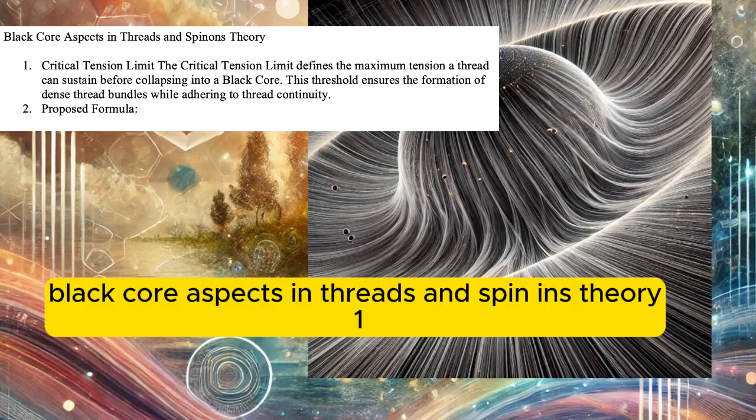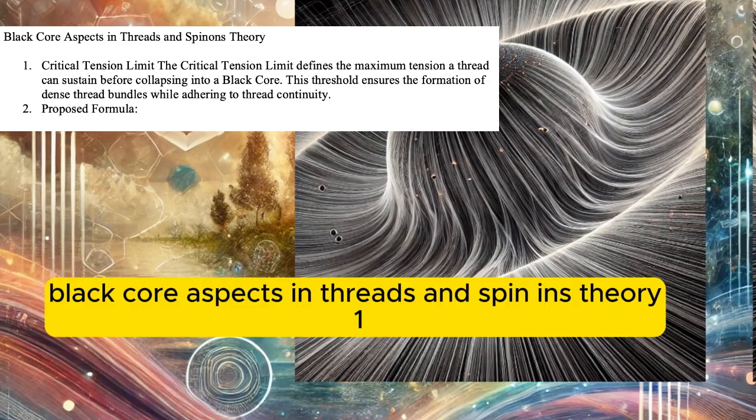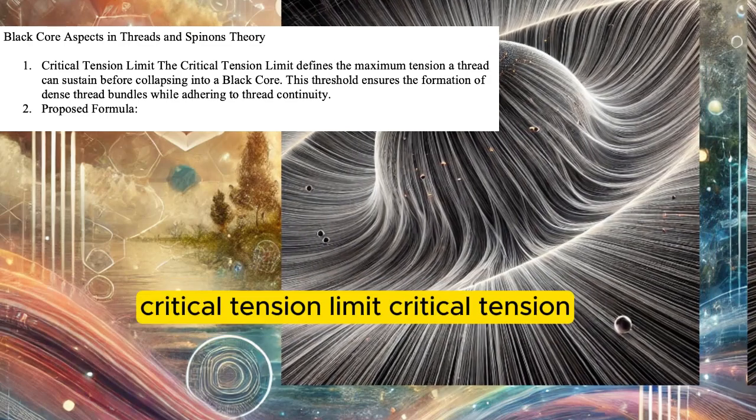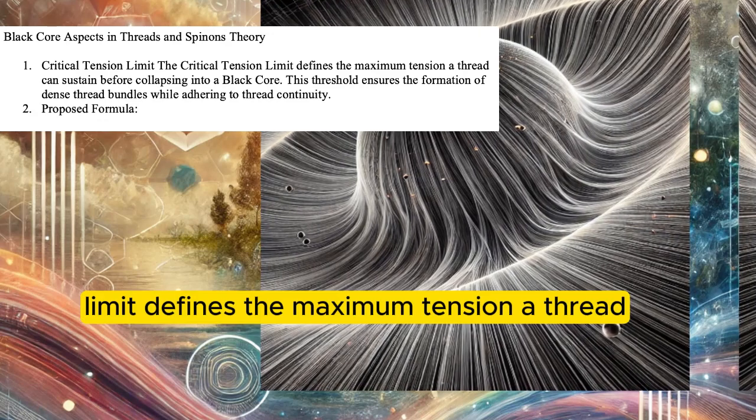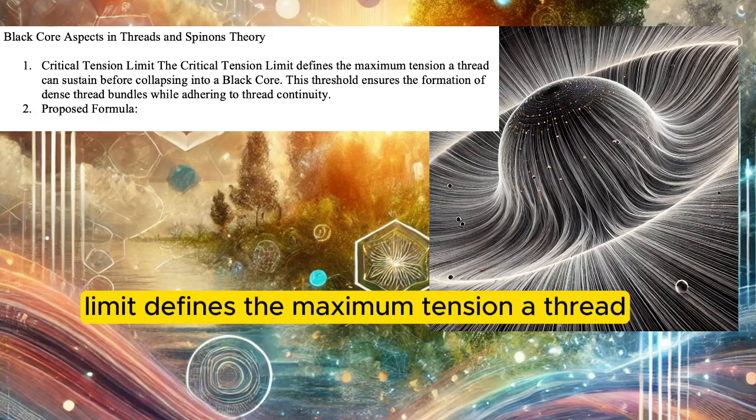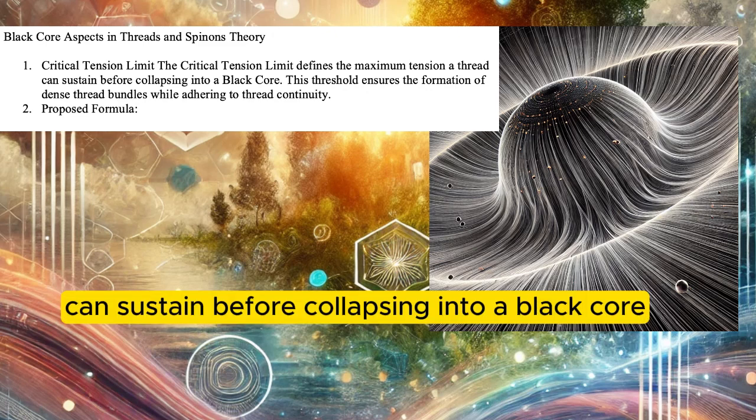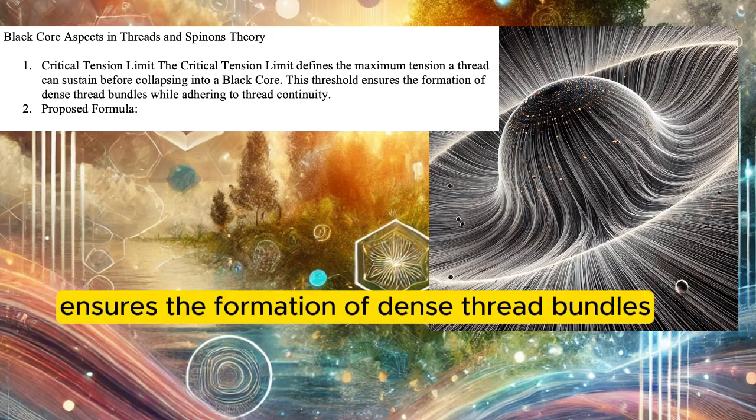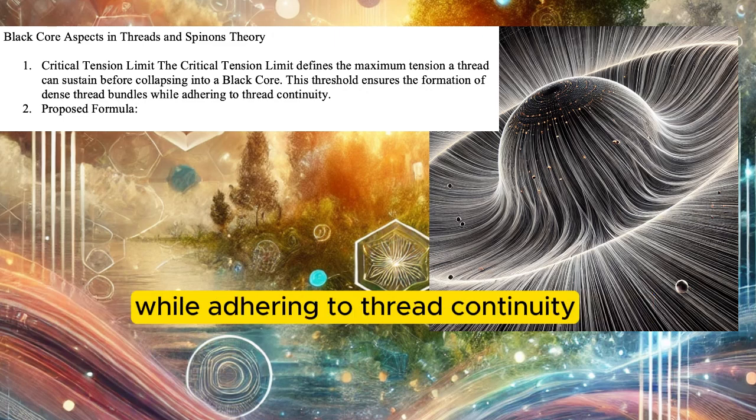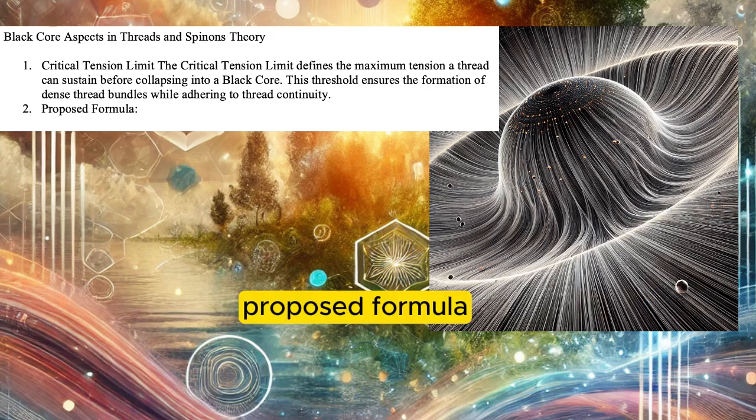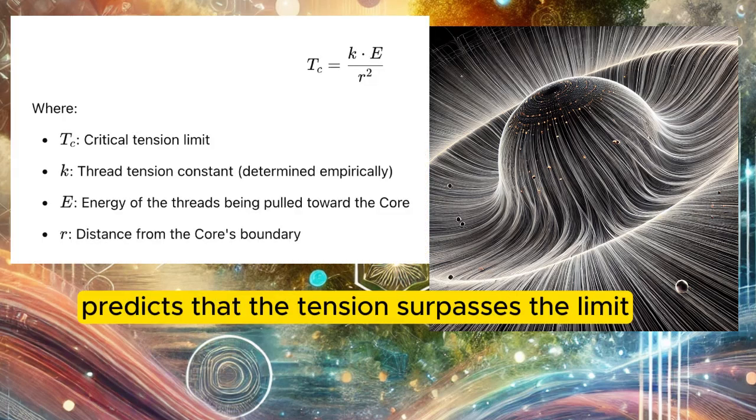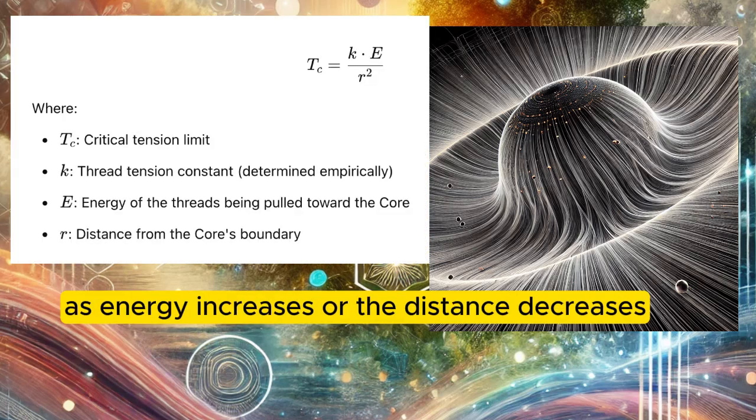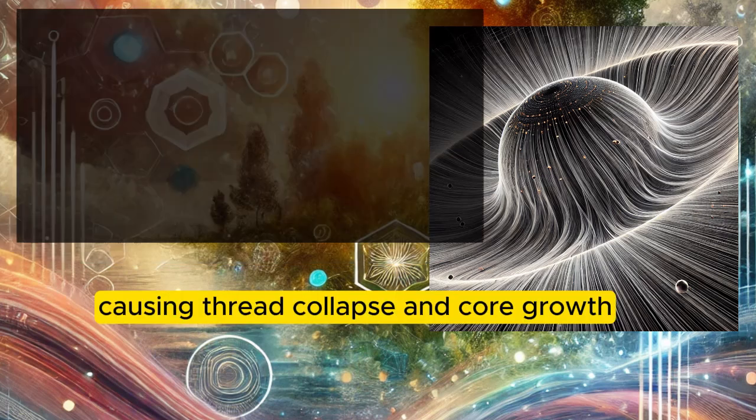Black core aspects in threads and spin-ins theory. Critical tension limit defines the maximum tension a thread can sustain before collapsing into a black core. This threshold ensures the formation of dense thread bundles while adhering to thread continuity. Proposed formula: this equation predicts that the tension surpasses the limit as energy increases or the distance decreases, causing thread collapse and core growth.